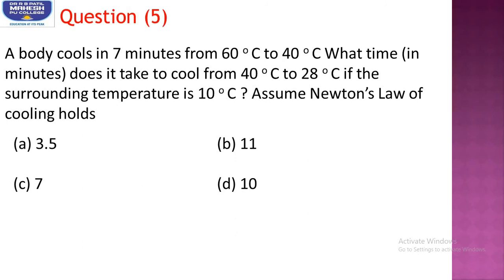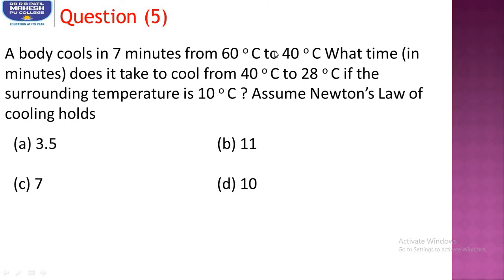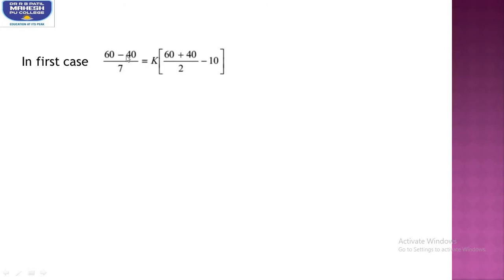Question number 5: A body cools in 7 minutes from 60°C to 40°C. What time does it take to cool from 40°C to 28°C if the surrounding temperature is 10°C? Assume Newton's law of cooling holds. For the first case: (60 − 40)/7 = k·[(60 + 40)/2 − 10]. Let us assume this is the first equation.